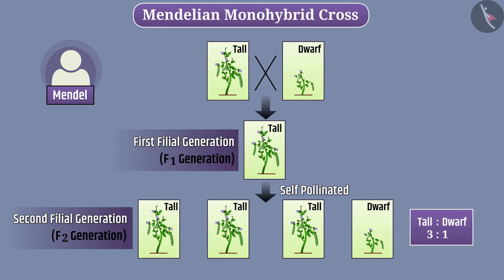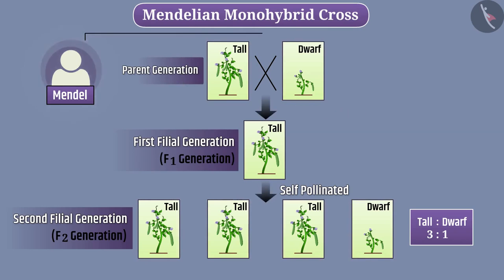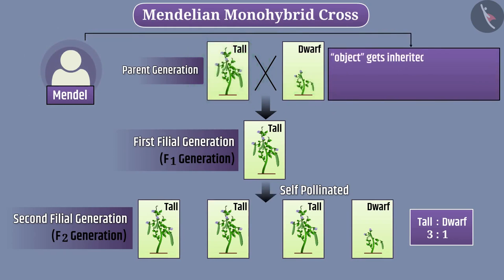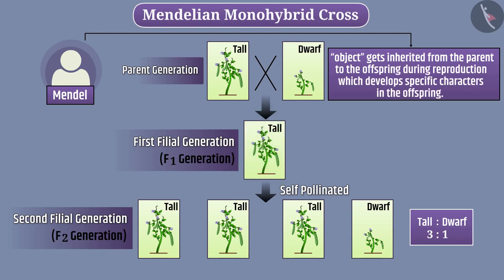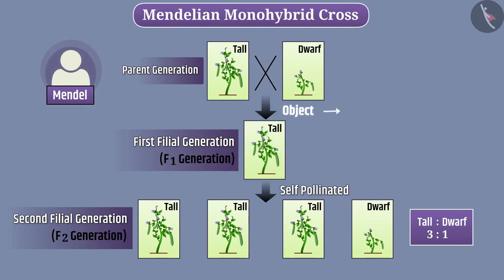This means that the information of tallness and dwarfness must have been transmitted without any change from the parent generation to the F1 generation and from F1 generation to the F2 generation. After understanding this fact, Mendel proposed that a certain object gets inherited from the parent to the offspring during reproduction, which develops specific characters in the offspring. Mendel called this object a factor — we call it a gene. Based on the above fact, we can say that a gene is a unit of heredity.